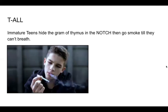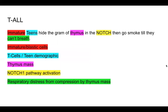Our next memory hook is a teen who likes to smoke a lot of weed: 'Immature teens hide the gram of thymus in the notch, then go smoke until they can't breathe.' Immature tells us this is a blastic disease. Teen represents T cells as well as the teen demographic. Thymus reminds us of the thymus mass. Notch is the pathway activated in 60% of T-ALLs and is now a target for therapies. 'Can't breathe' represents the respiratory distress that can occur from compression by the thymus.